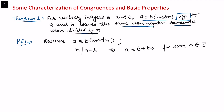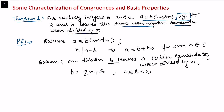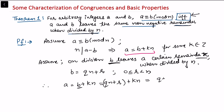Now we want to show that the remainder is the same when they are divided by n. Suppose that b leaves remainder r when divided by n, so b equals qn plus r where r lies in the range 0 to n-1. From the previous expression, a equals b plus kn, so substituting: a equals qn plus r plus kn, which equals (q plus k) times n plus r.